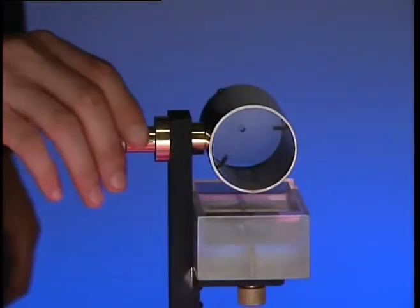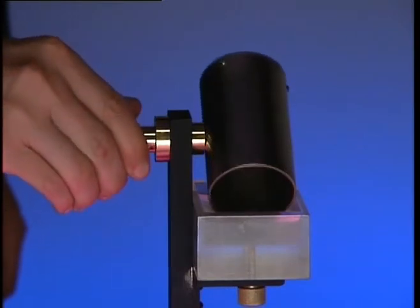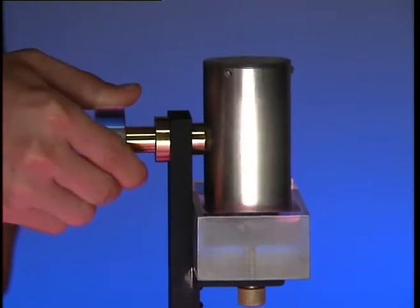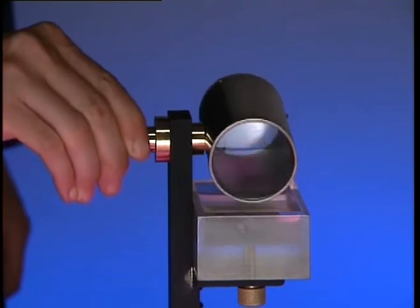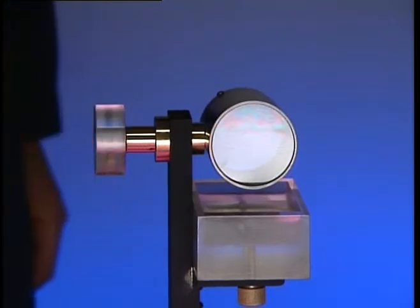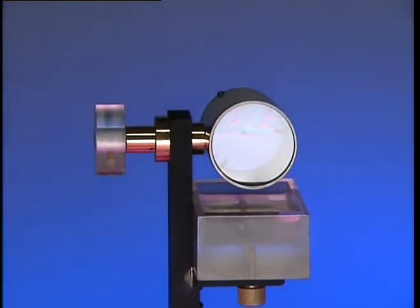If we dip this cylinder into a soap solution, a thin flat film is placed on the mouth of the cylinder. We'll shine light off the soap film and onto the screen to show how the colors we see depend on the thickness of the film.